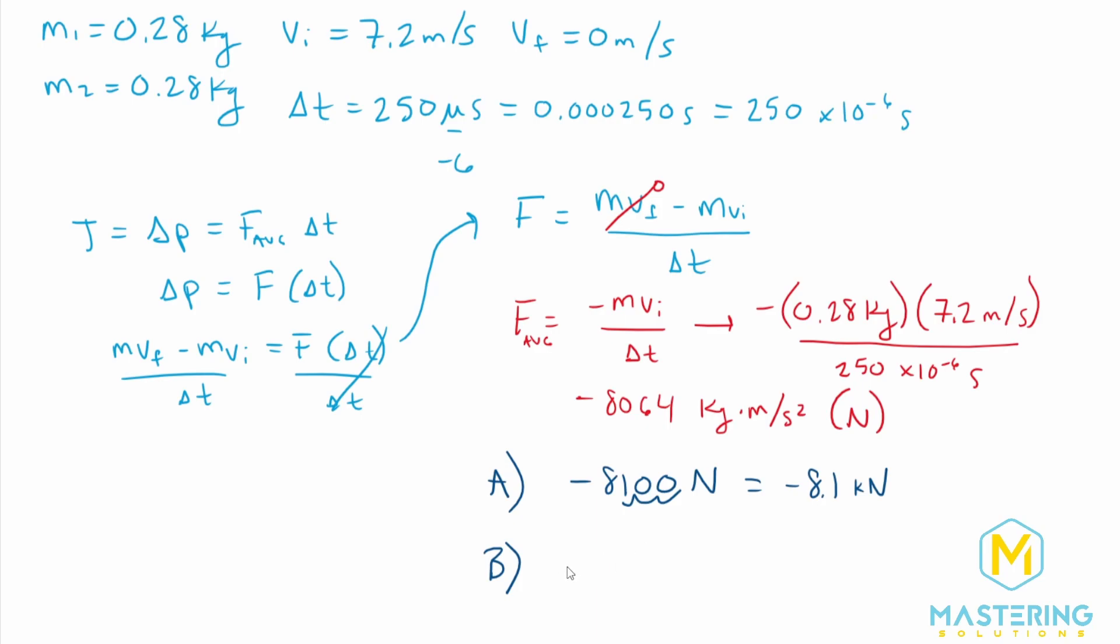So the force on the second ball is going to be a positive 8.1 kilonewtons. And these are your answers for part A and for part B.